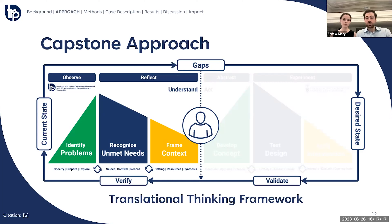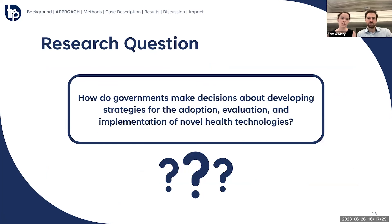We then framed our research to focus on the government context and associated decision-making processes because of the important role our government plays in the Ontario health system. This brought us to our research question: how do governments make decisions about developing strategies for the adoption, evaluation, and implementation of novel health technologies? It's important to note that in our research context, implementation refers to creating system-level guidance for evaluating evidence, assessing reimbursements, and standardizing reporting.